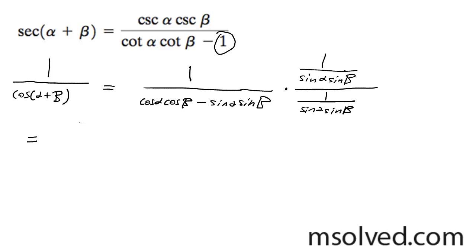And you're going to get 1 over sine alpha sine of beta. And you get your cosine alpha cosine of beta.